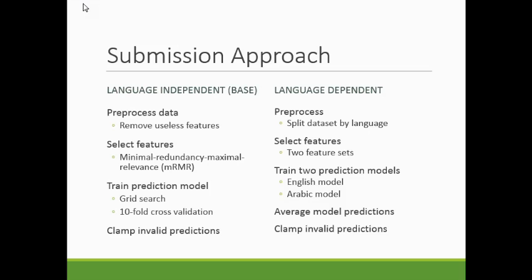Now that I've talked about the dataset, I want to talk about the approach I took for training and testing each one of my models. This is a four-step process that includes pre-processing data, selecting features, training the prediction models, and then doing post-processing, which in this case is just clamping invalid predictions. I actually took two different approaches to this problem. The first assumes that language does not matter and that the same features in English writing correspond to the same features in Arabic writing — this is what I consider my base approach.